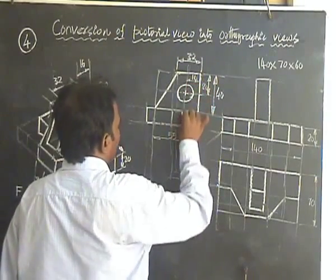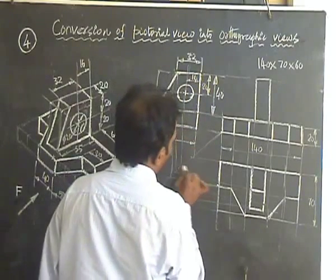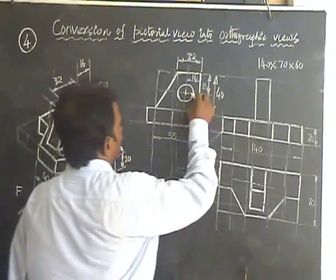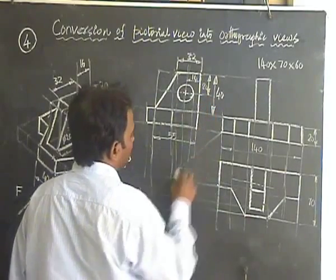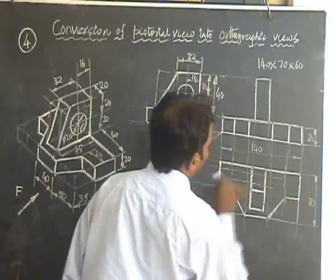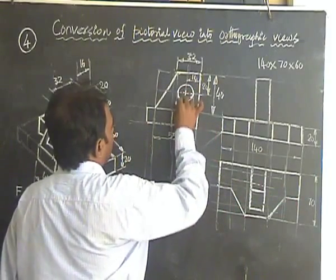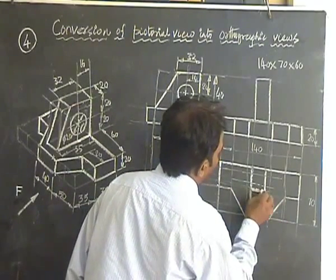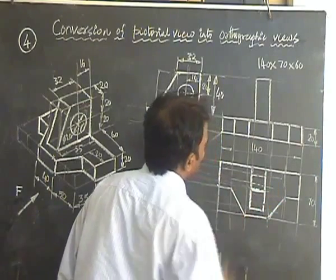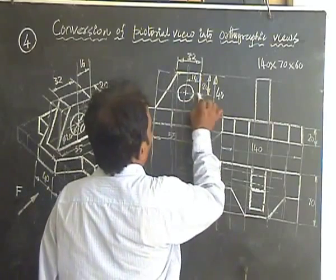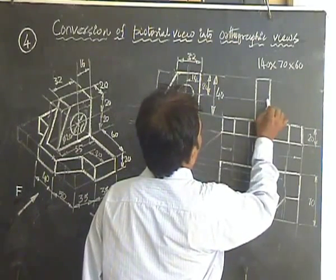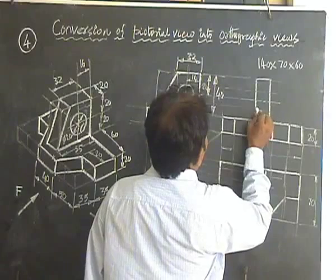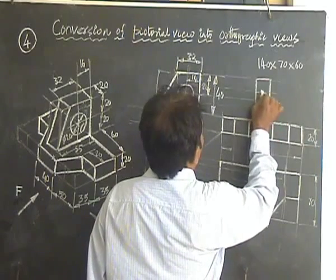Now you locate this center and you bring this center line to the top view. This center line is supposed to be drawn to the top view. Afterwards, the circle is not visible in the top view. It should be represented by two hidden lines. Bring the first line here. Then you bring the second line. So you specify the circle by two dotted lines.